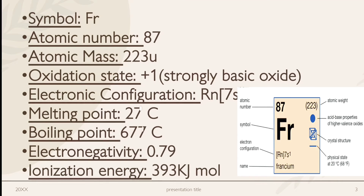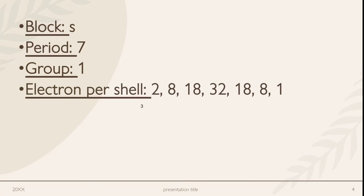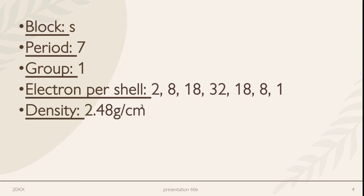Ionization energy is 393 kilojoules per mole. It is present in the s-block. It belongs to Period 7 and Group 1. Electrons per shell: 2, 8, 18, 32, 18, 8, 1. Density is 2.48 grams per centimeter cube.